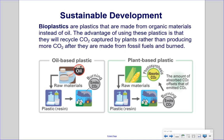Bioplastics are plastics made from organic materials instead of oil. The advantage is that they recycle CO2 captured by plants, rather than producing additional CO2 from fossil fuels. In traditional oil-based plastics, raw materials from oil produce the plastic and resin, which when incinerated releases CO2 that was originally stored underground. In plant-based plastics, raw materials come from plants, and when the plastic is burned the CO2 released was originally captured by those plants — so no net new CO2 is added; it is simply recycled.